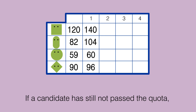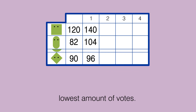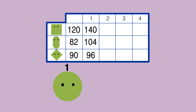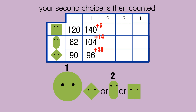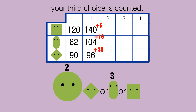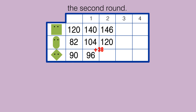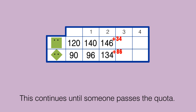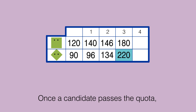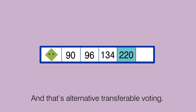If a candidate has still not passed the quota, we then eliminate the next candidate with the lowest amount of votes. If the eliminated candidate was your first choice, your second choice is then counted. If they were your second choice, your third choice is counted. We then add these numbers to the votes from the second round. This continues until someone passes the quota — once a candidate passes the quota they are elected, and that's alternative transferable voting.